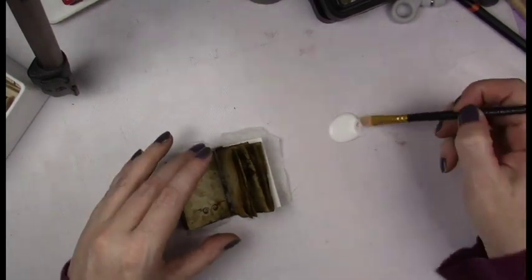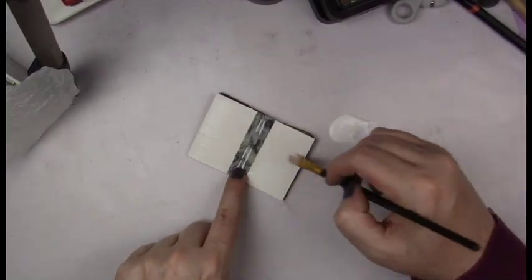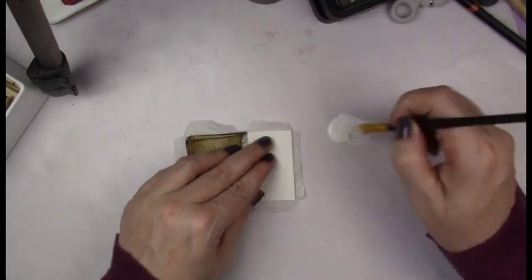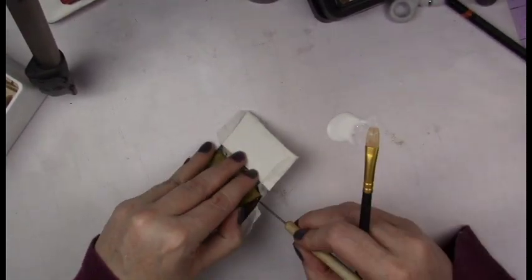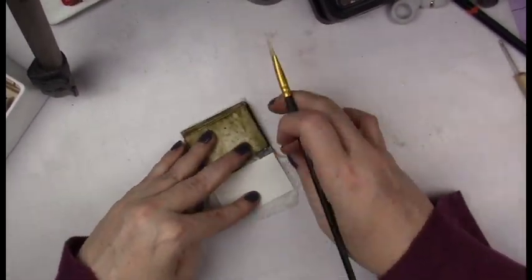I laid out some Mod Podge on my craft mat and with a paintbrush I just covered the outside with Mod Podge. I added the tissue and then I did the folding over of the outside pieces onto the inside of the book.